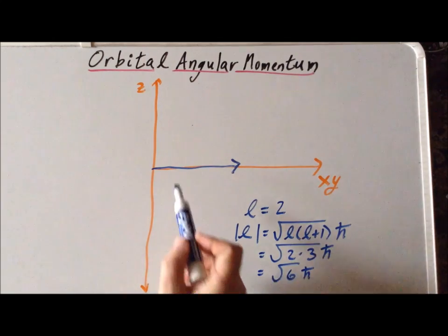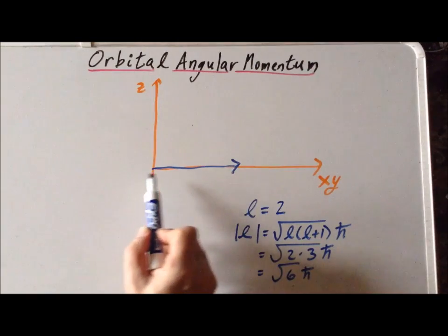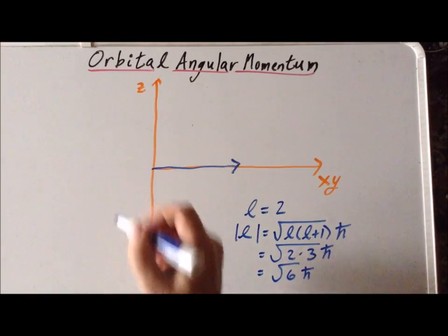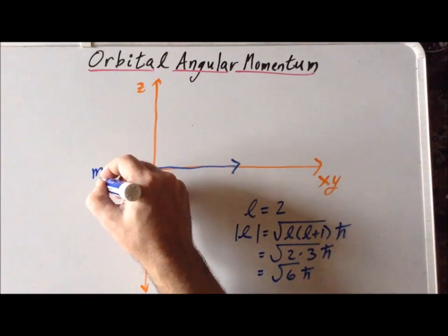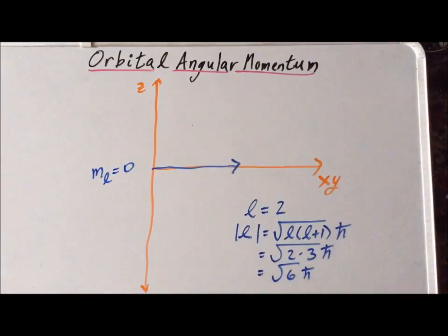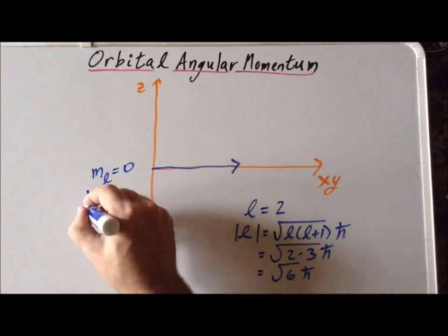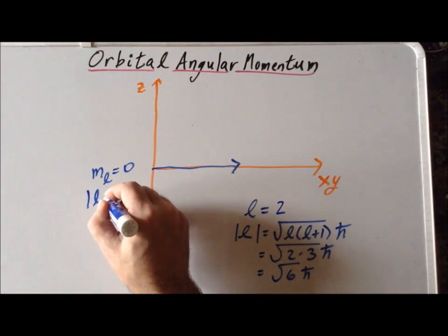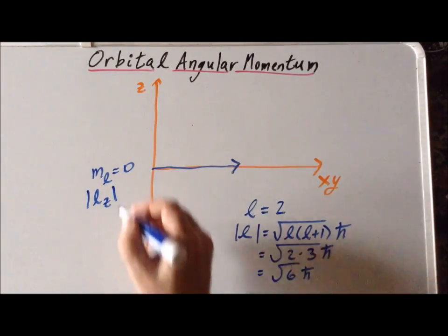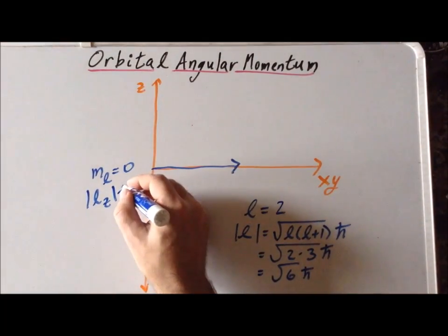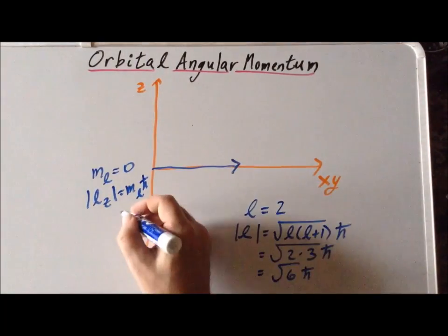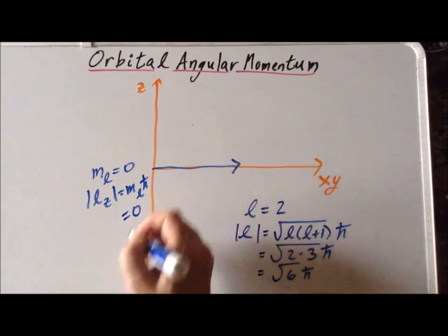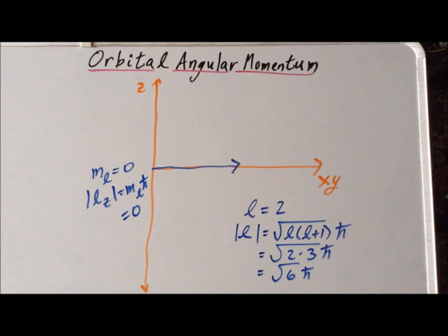In this particular case, it's easy to see that the z-component on the z-axis is exactly equal to 0. So this corresponds to the case where the quantum number m sub l is equal to 0, and we want the magnitude of the z-component of the angular momentum, which is L sub z, and our formula for that is m sub l times h-bar. So the magnitude of the z-component of the angular momentum in this case is exactly equal to 0.